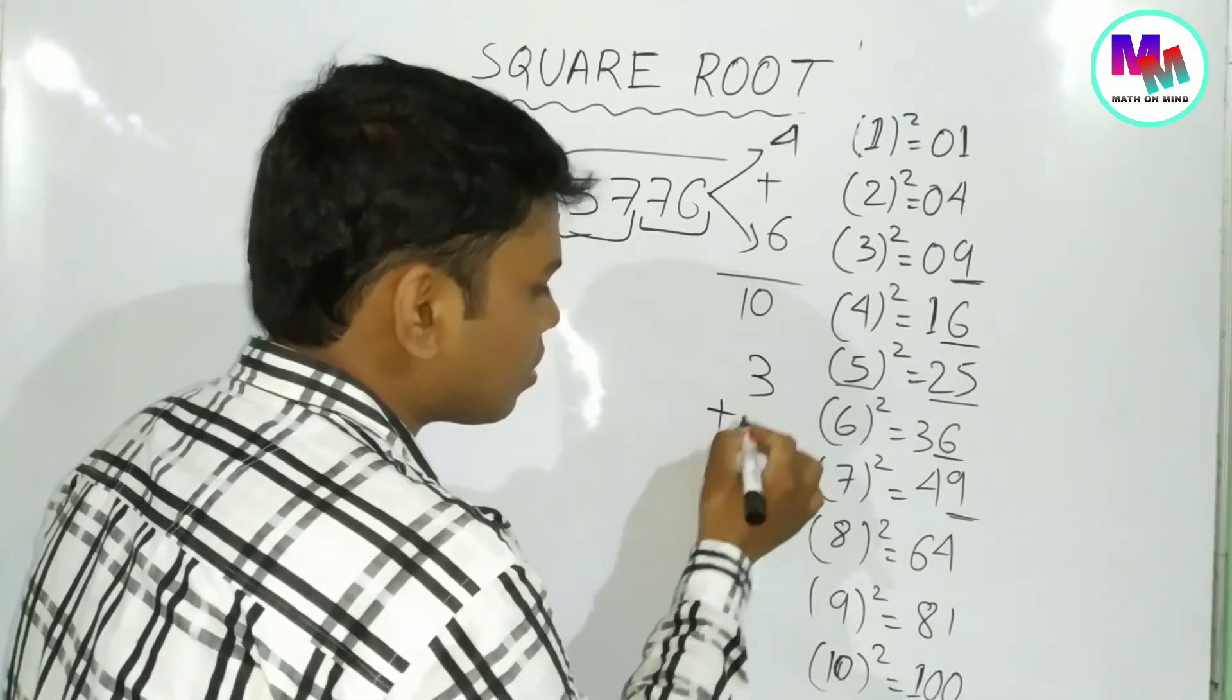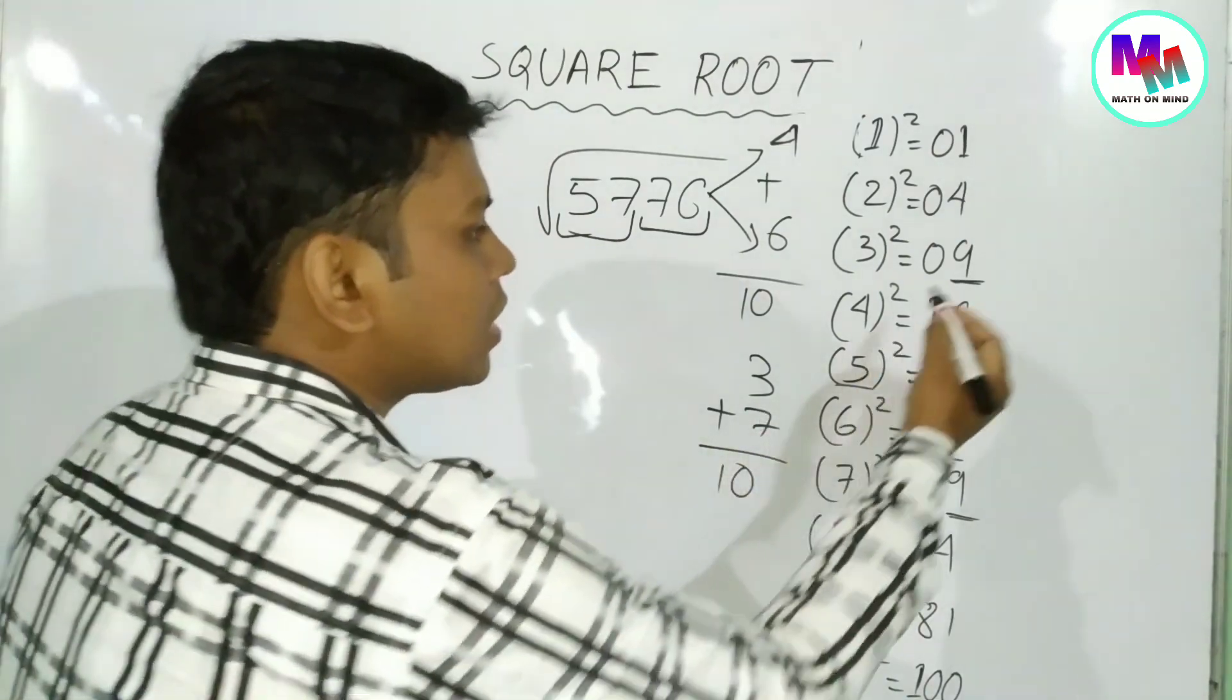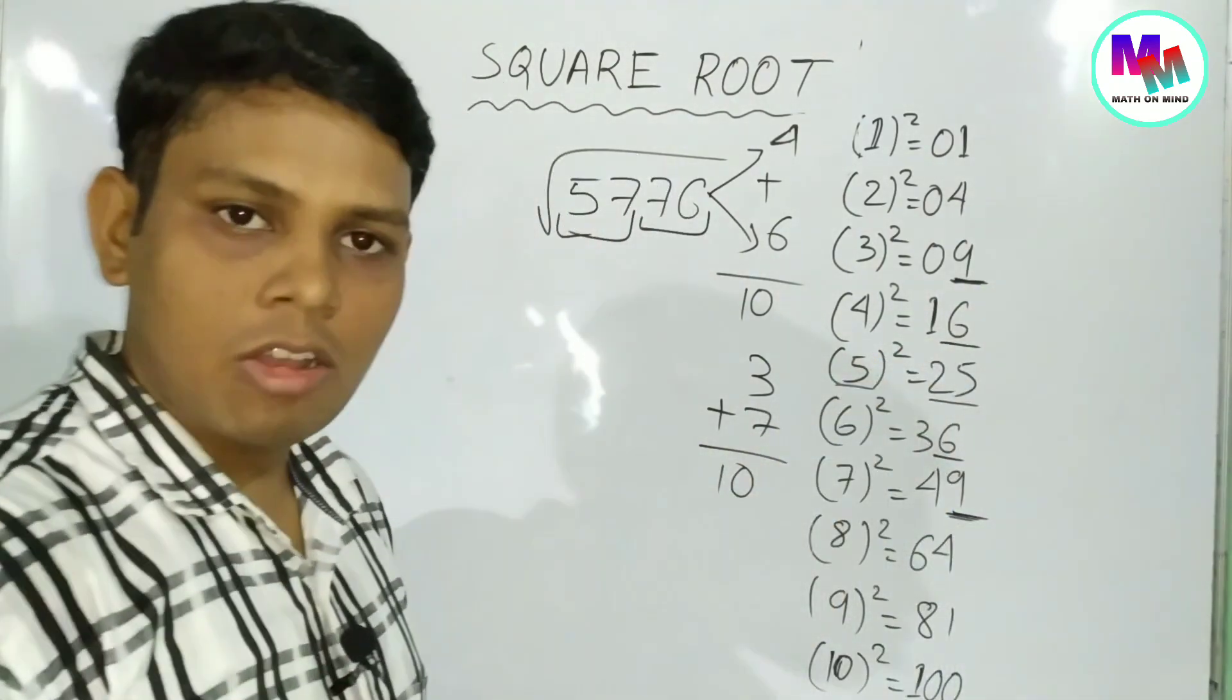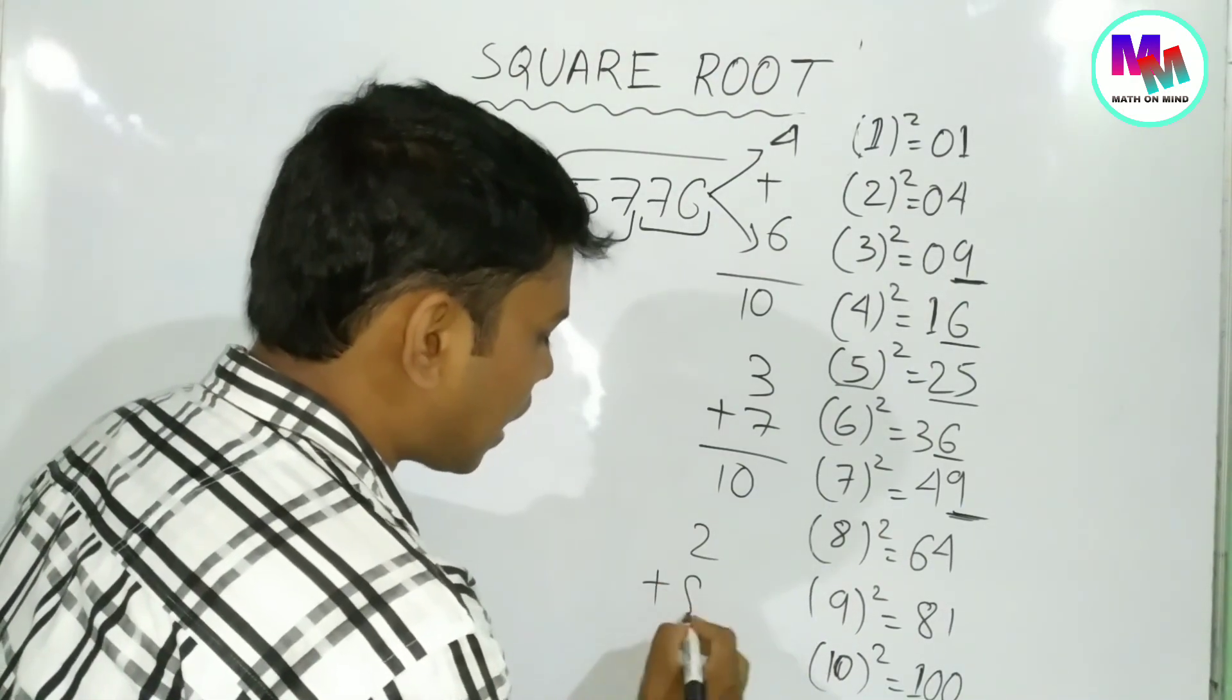Looking at the numbers, we find which one fits. The perfect square that works - we identify that number from our table of squares.